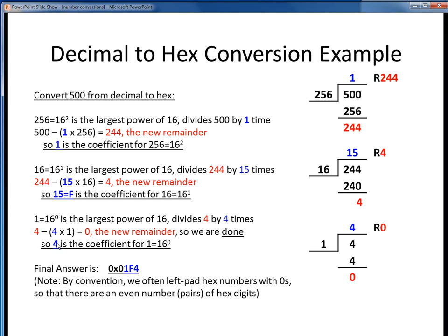If we then collect all these coefficients, 1, 15, and 4, and of course we recognize that 15 gets translated into the hex digit F. If we collect these terms up, our answer is 1F4 hex.